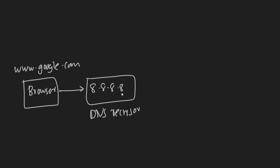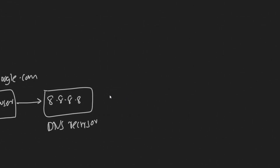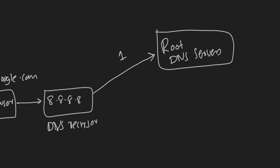If it's not found in the cache, the first request from the DNS recursor goes to the root DNS servers. The recursor has a list of 13 different root DNS server IP addresses and makes a request to one of them, asking: what is the IP address of www.google.com? The root DNS server responds: I don't know the IP address of www.google.com, but I know the IP addresses of DNS servers for .com — why don't you go and ask them?